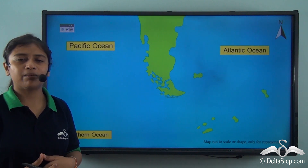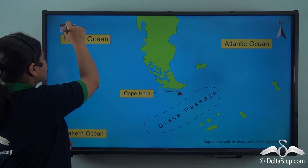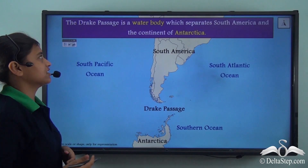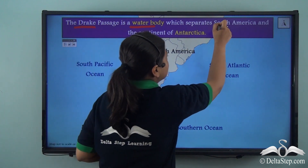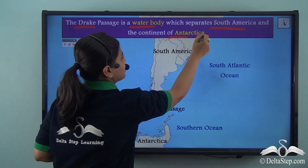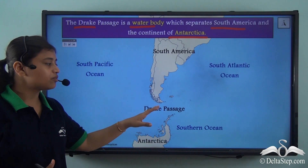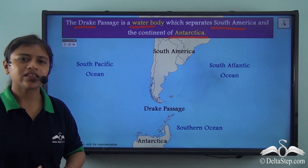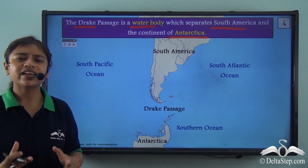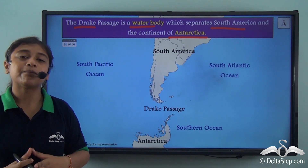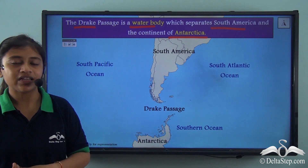We looked at the Isthmus of Panama in the northern part of the continent. Now let's zoom into the southern part, where we have Cape Horn and the Drake Passage. The Drake Passage is a water body that separates the continent of South America from the continent of Antarctica. It is believed that the Drake Passage is a place where ships experience the most treacherous voyages, with very strong and dangerous currents and waves that rise up to 40 feet in height.